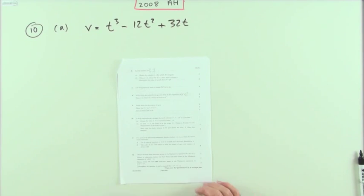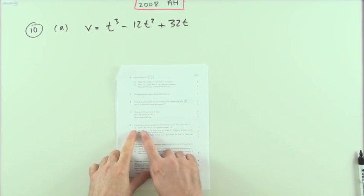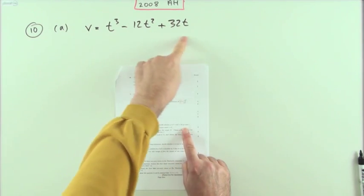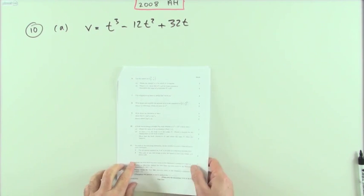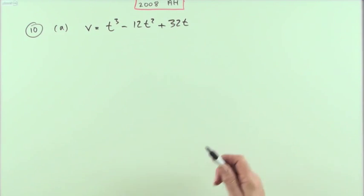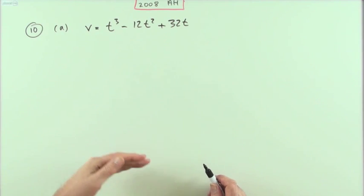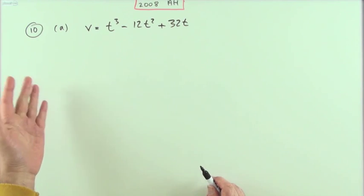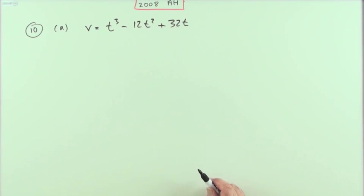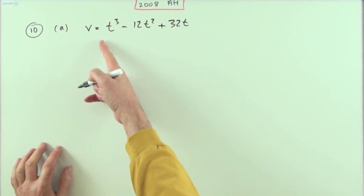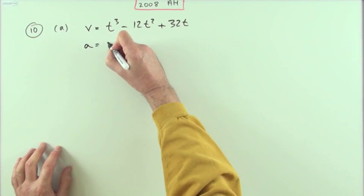Number 10 from the 2008 paper. Here we've got the velocity equation — the velocity expressed as a function of time — and we need to obtain the expression for the acceleration. They're all just related to each other; one is the rate of change of the other. Velocity is the rate of change of distance, and acceleration is the rate of change of velocity. Or going backwards, integrate.